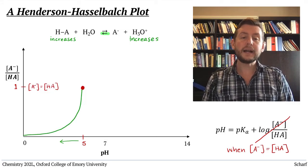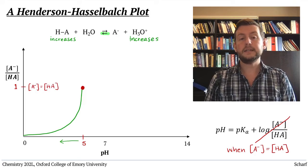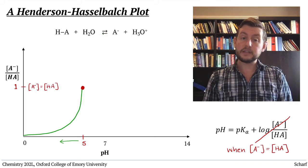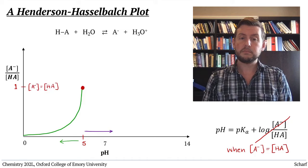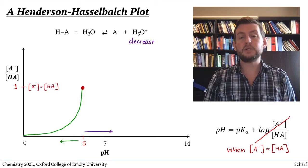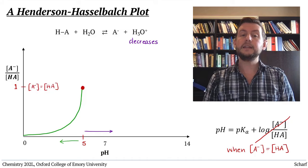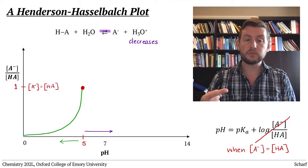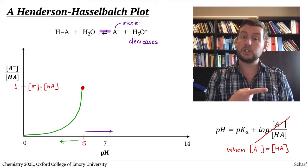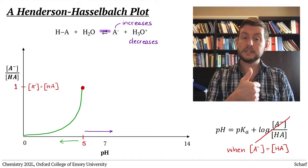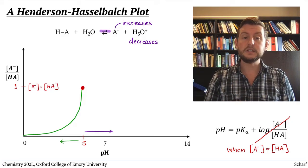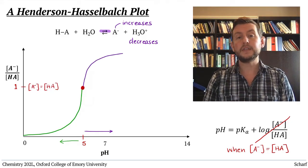If we go back to our 50-50 point and start increasing the pH, we reduce the amount of H3O plus present, and the equilibrium shifts to the right. The concentration of A- increases, and HA decreases, and we have a curve that looks like this.